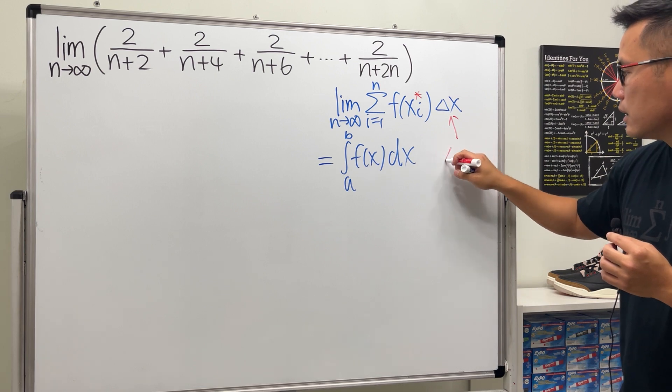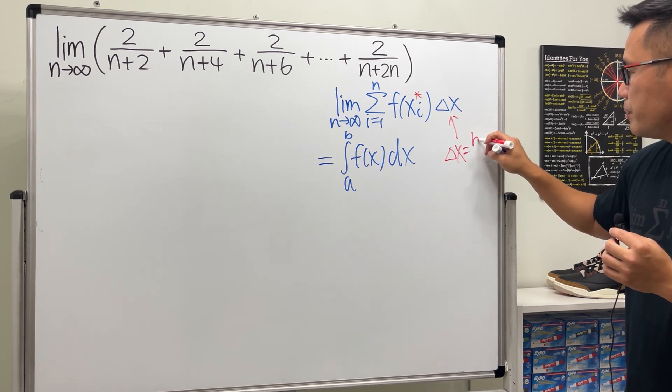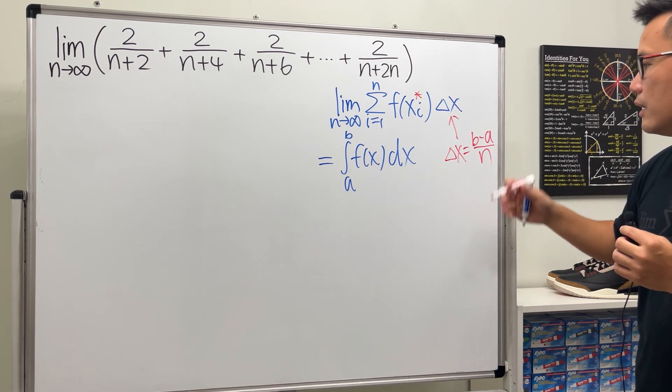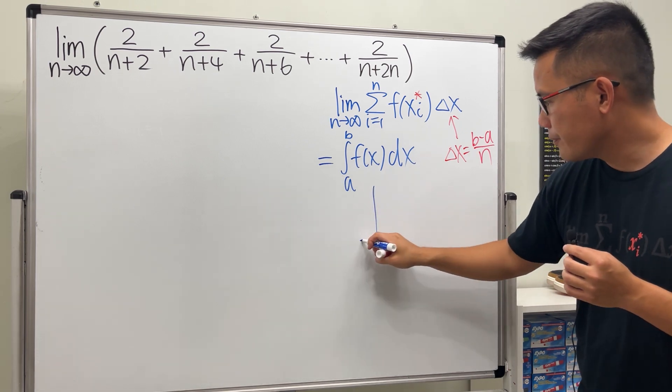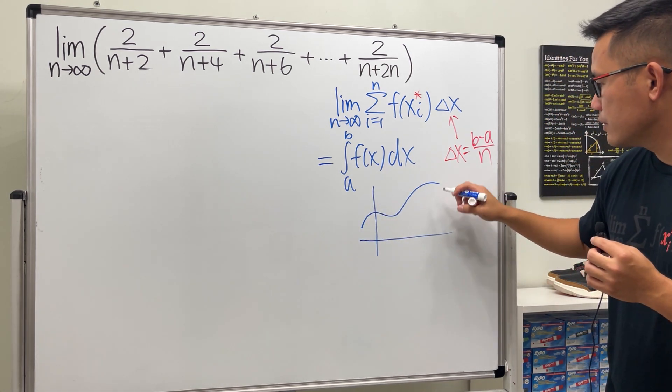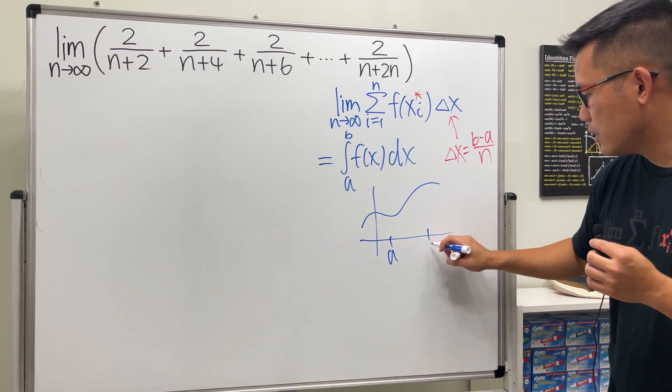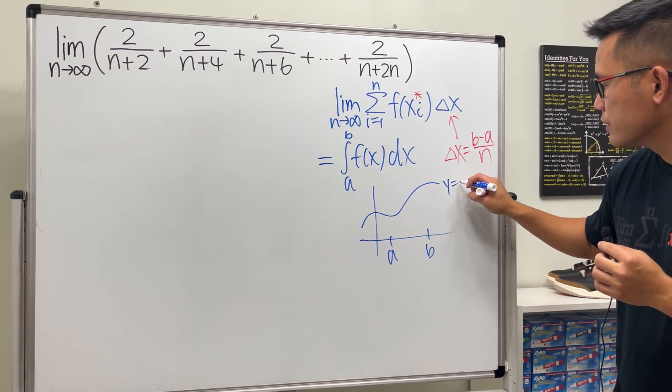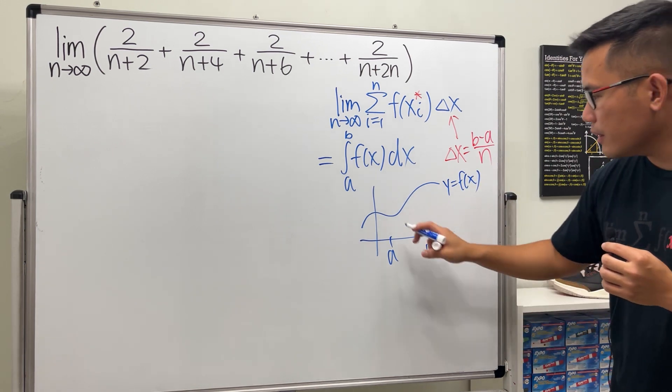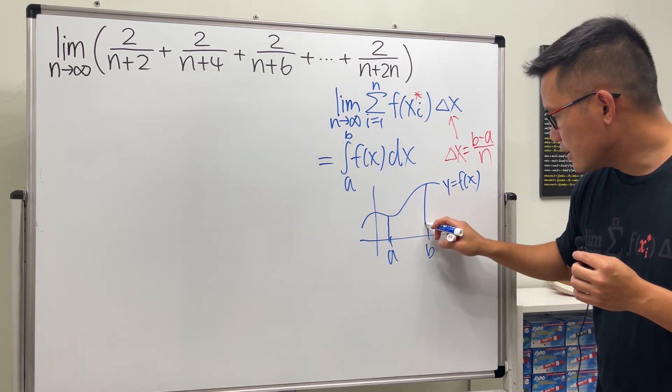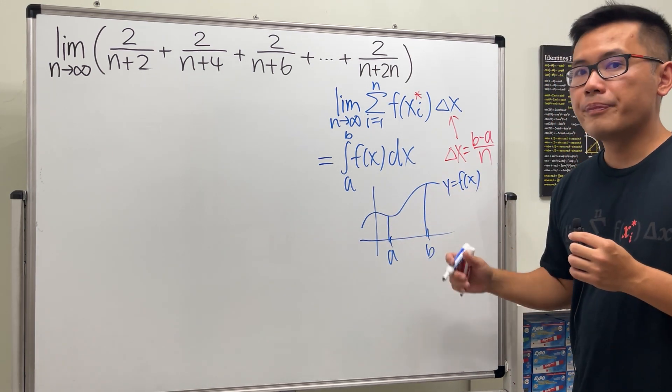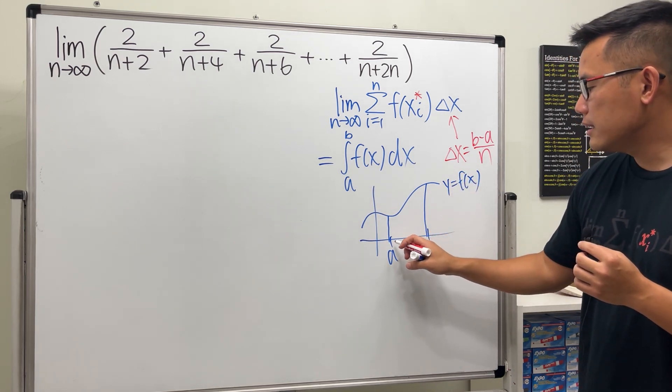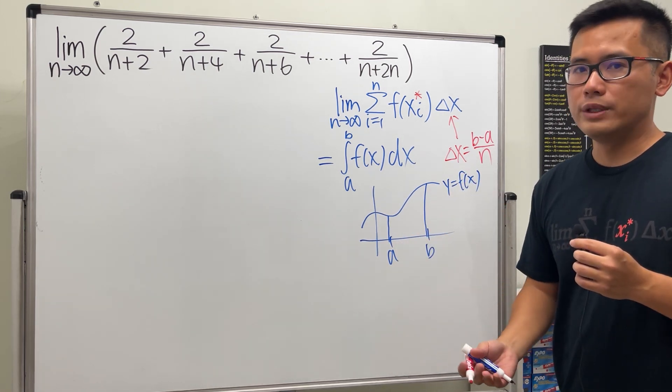It's all from the delta x because the delta x is equal to b minus a over n. And what exactly this means is that when we have an interval a to b, we want the area under the curve. Let's say this is y equals f of x. Let's say this is our region. We want the area. And to do so, we are going to cut this into n pieces, equal width, vertical.